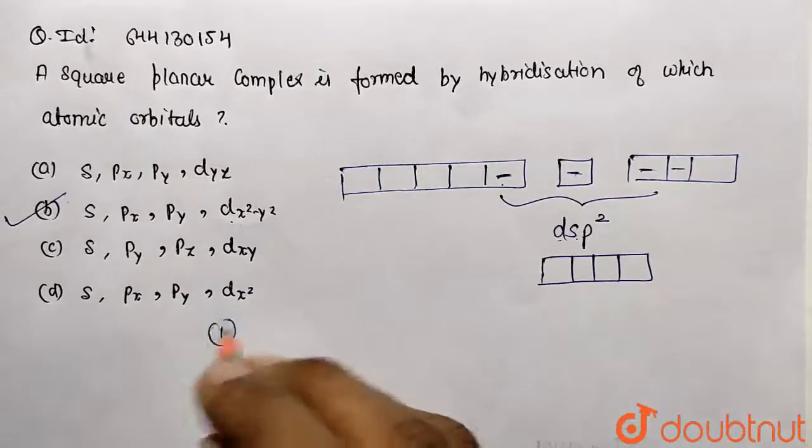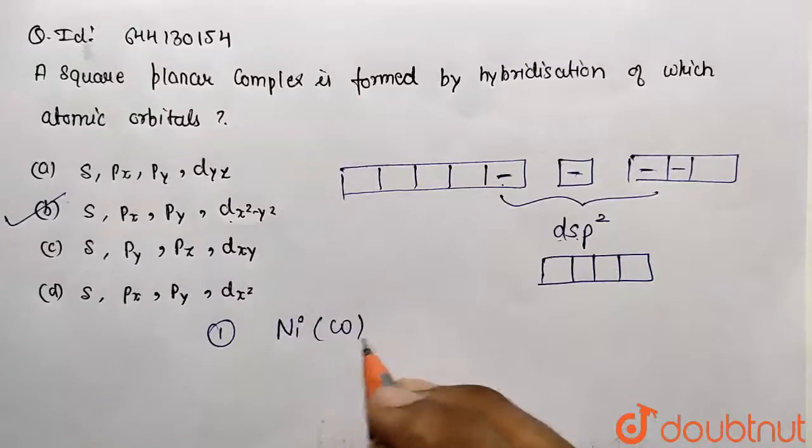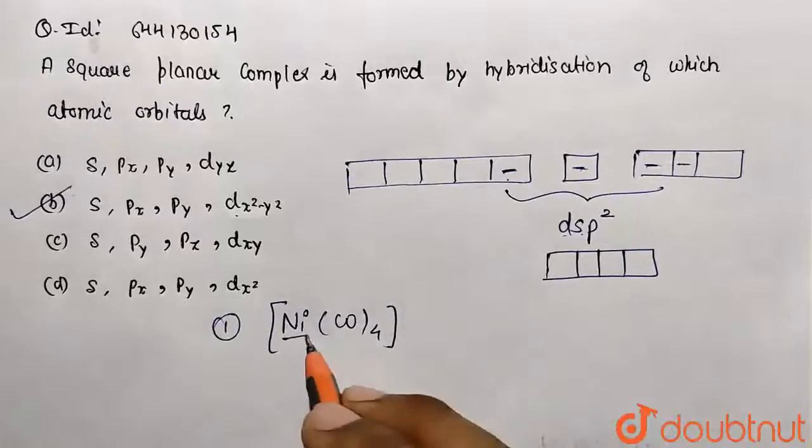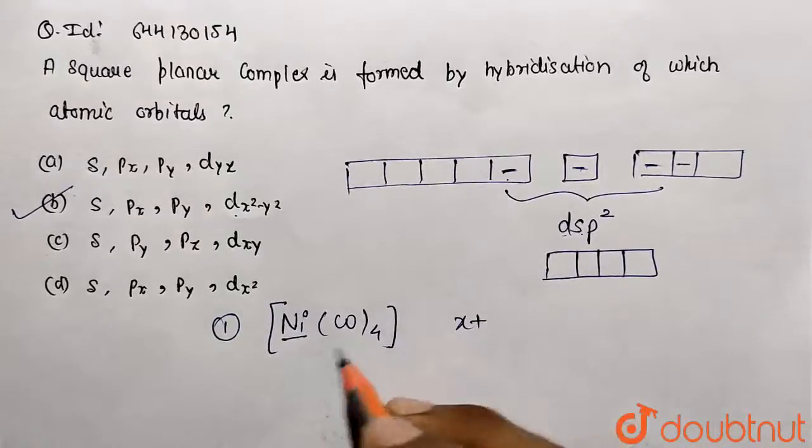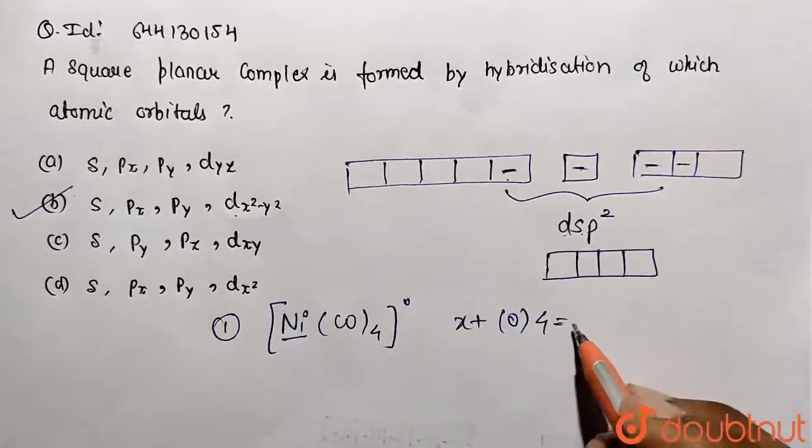Now I am taking one example of the complex for explaining you. Take nickel tetracarbonyl. How to go with the complex? First of all, calculate the oxidation state. So x, this is neutral ligand, so 0 multiplied by 4, and overall charge not given, we assume it to be 0.